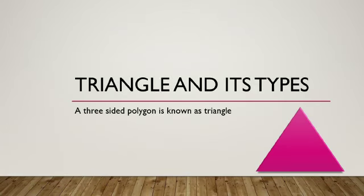A three-sided polygon is known as a triangle. A triangle has three sides, three vertices and three angles.